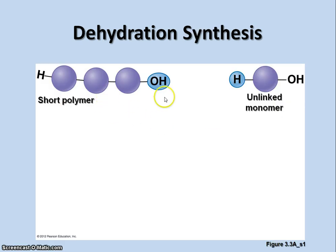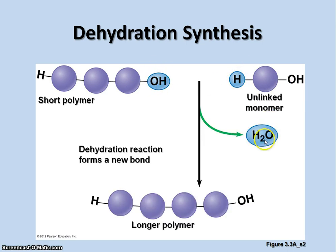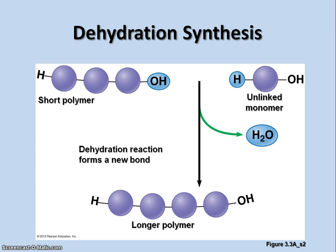Here we have a short polymer with a few things attached together and an unlinked monomer. Notice there's a hydrogen and a hydroxyl group on the end of each chain. If you take this hydroxyl group and this hydrogen and remove them, you get a water molecule, which opens up a bonding site on each of the other molecules and joins them together to make a longer polymer. This is dehydration synthesis — it synthesizes bigger molecules by removing water. Every time you add another monomer to the chain, it removes another water molecule.